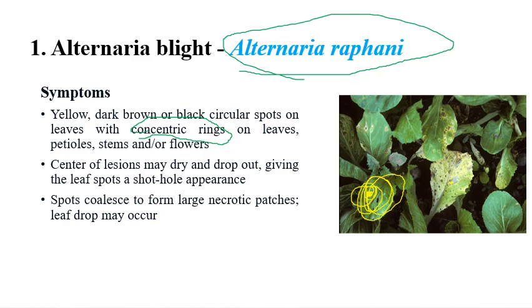Concentric rings can be seen on leaves; in some cases they can also be observed on petioles and flowers. In advanced stages, another important symptom is shot hole symptom — small holes can be seen on leaves. Initially, small brown necrotic patches appear; the spots coalesce and look like bigger spots in later stages. Leaf drop can also be observed.